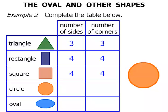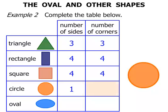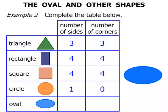The Circle. Now the number of sides — it's got one long curved side, but there is only one. Now what about corners? Can you see any corners? No, neither can I — so it's actually zero, there are no corners in a Circle. Let's finally take a look at the Oval. Number of sides: just the one side, it's a curved side, but there is only one. And the number of corners? Zero.